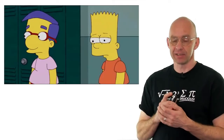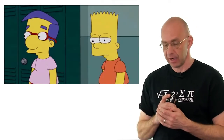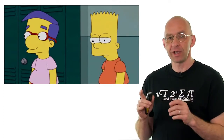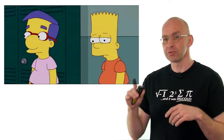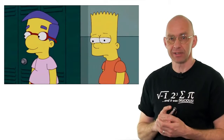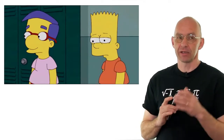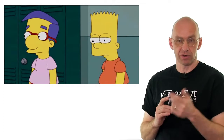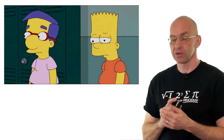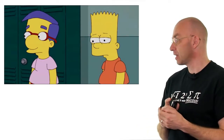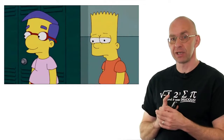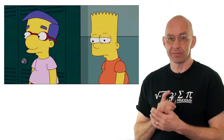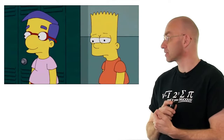There's heaps and heaps of mathematics in the Simpsons and we already talked about some of it. There's one equation which occurs more often than any other equation in the Simpsons. In a recent video we had Pythagoras theorem with two occurrences. Now this particular equation, or identity, comes up three times. So let's just see what it is.